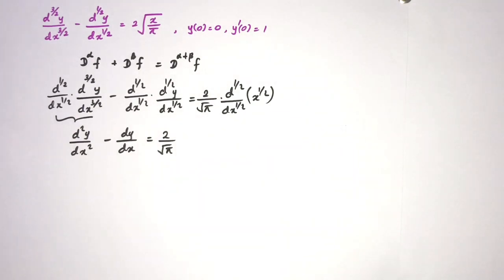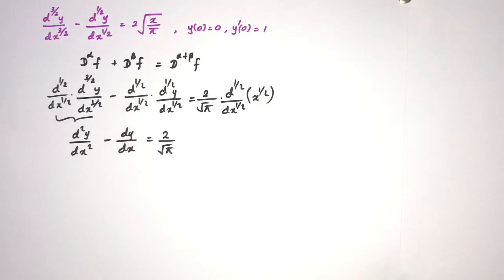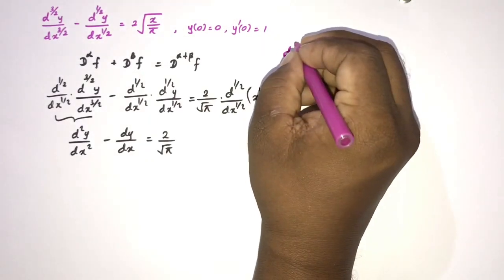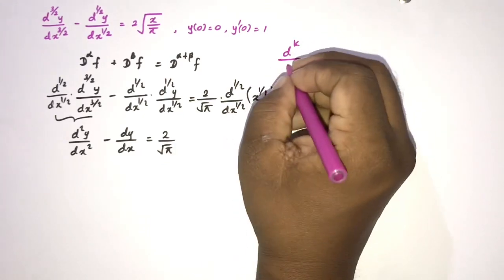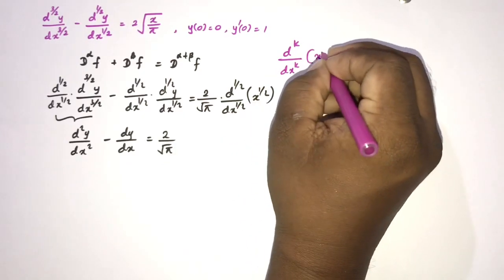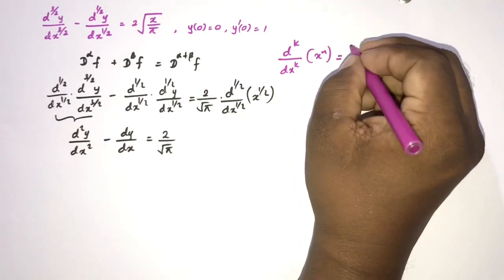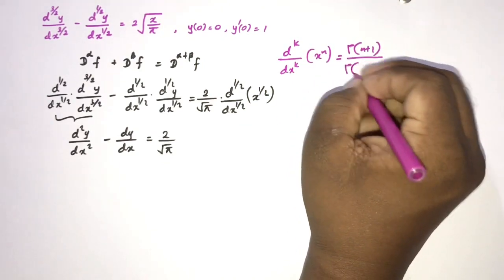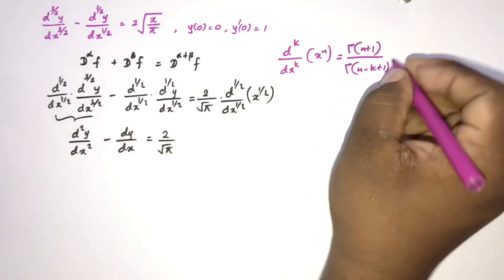Now we need to compute the half derivative of x^(1/2). From previous videos, we discussed the general power rule of fractional calculus: d^k/dx^k of x^n equals Γ(n+1)/Γ(n−k+1) · x^(n−k). Here k = 1/2 and n = 1/2.